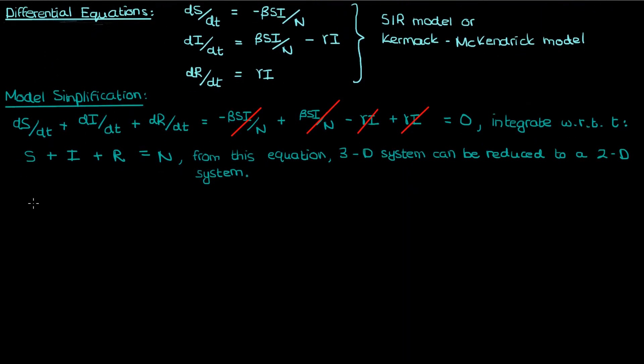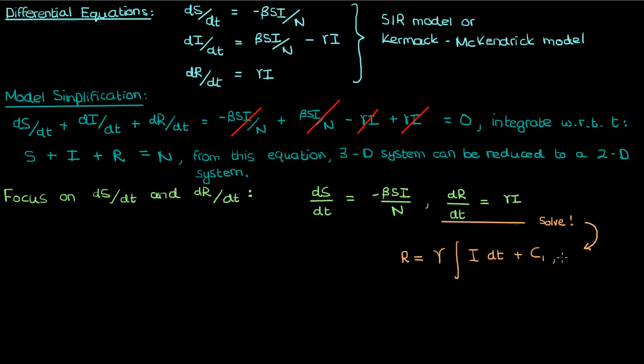And let's actually start to solve the system of differential equations focusing on dS by dt and dR by dt. If we solve these two equations, then I can be determined as a direct consequence using the fact that everything adds to N. If we solve for dR by dt, we find that R is gamma times the integral of I with respect to t. I'm also going to add an integration constant c1 just to make things complete.